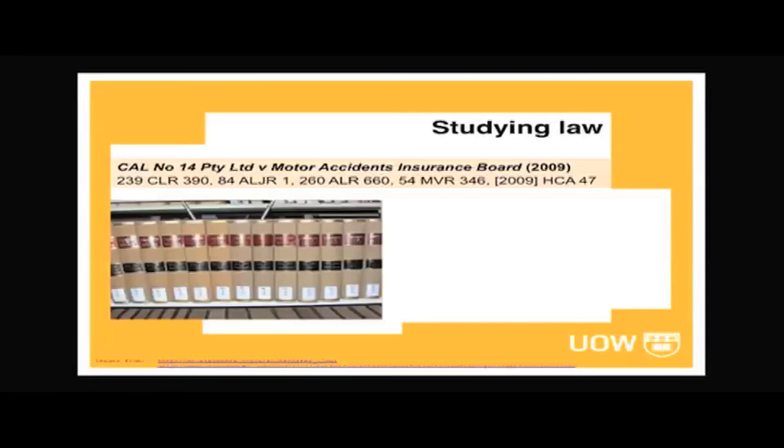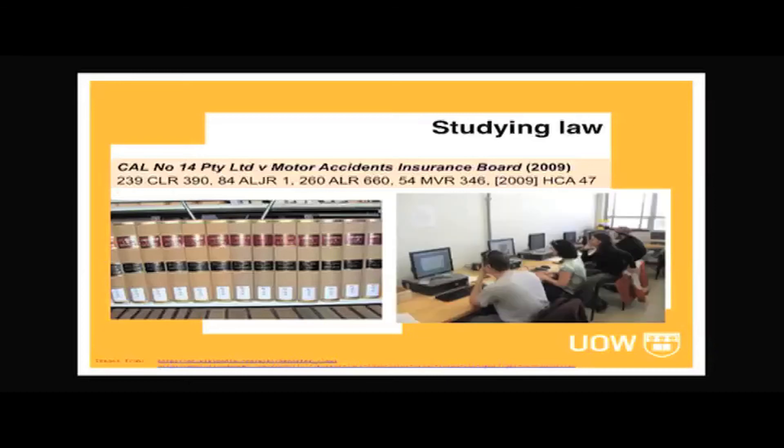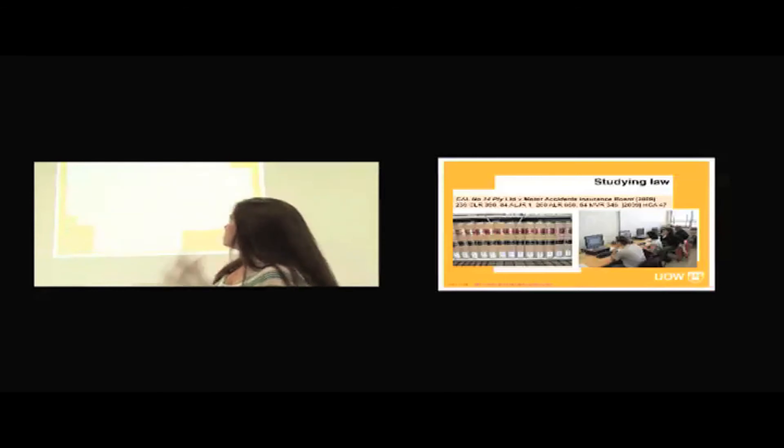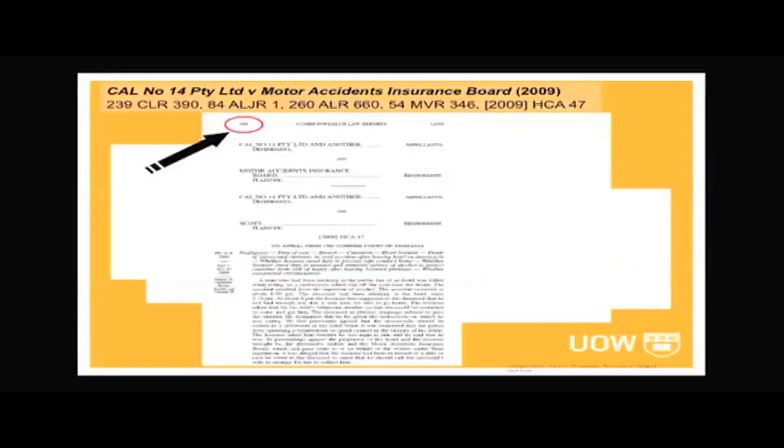You would go to the library and pull out the book. Well, in fact, that's what I did in my days, but these days you probably wouldn't have to do that. As you already know, nearly everything is online. So, you would get online and look up the Commonwealth Law Reports. You would go to volume 239 and you would turn to page 390 and that's where you would find the story. You would find the information that has been written down, the law that explains this argument or this disagreement between these two people.